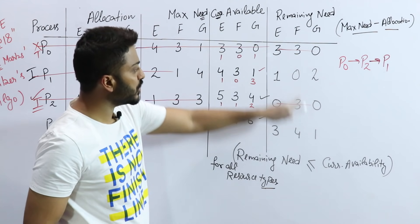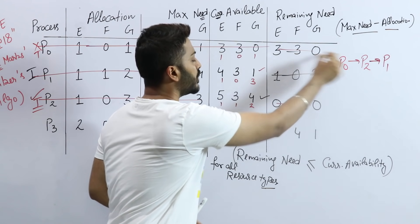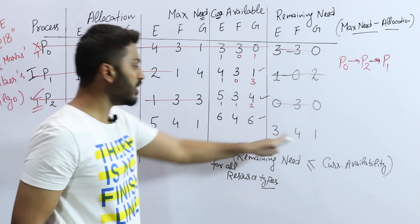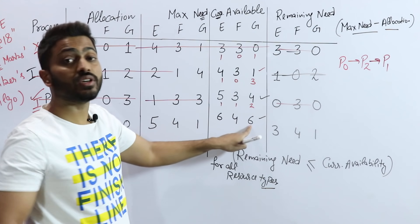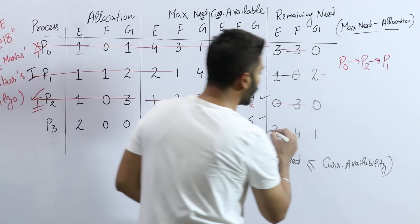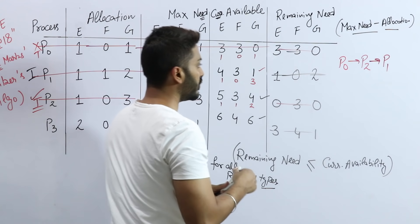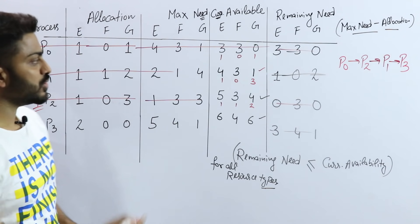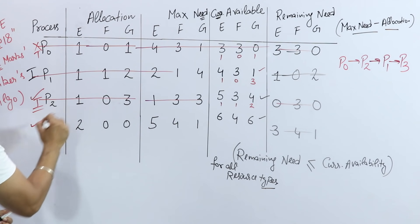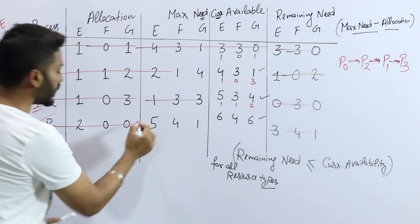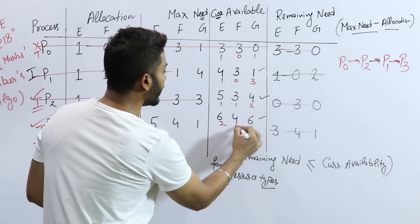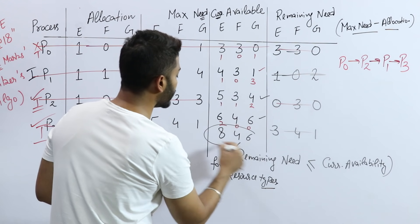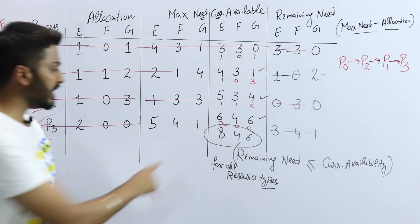P1 is added to the safe sequence and gets terminated. We take back P1's allocated resources (1, 1, 2) and add to availability: 5+1=6, 3+1=4, 4+2=6. New current availability is (6, 4, 6). Now check P3: it needs (3, 4, 1). We have 6, 4, 6 — all satisfied. P3 executes and terminates, giving final availability (8, 4, 6).